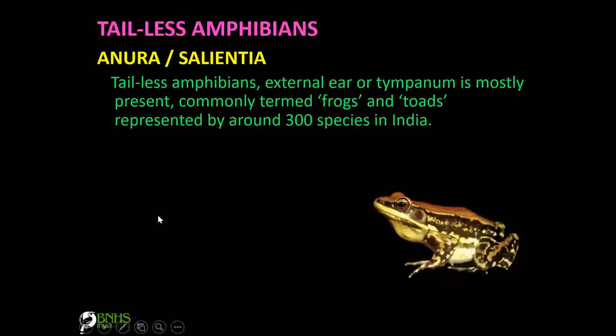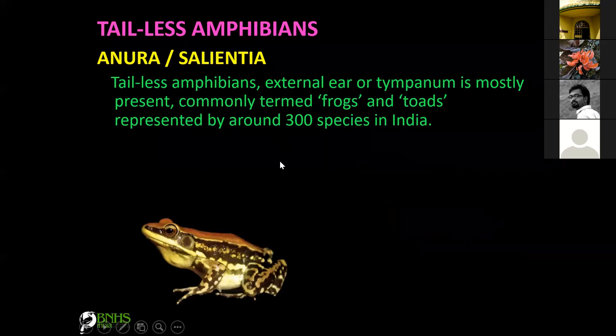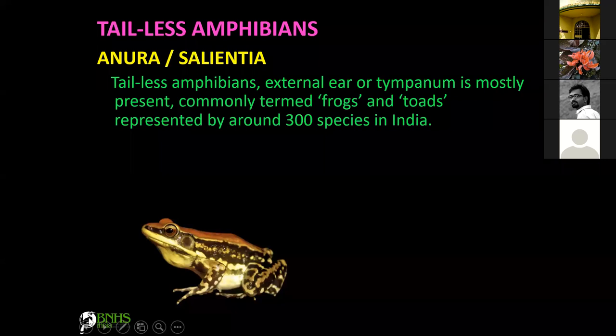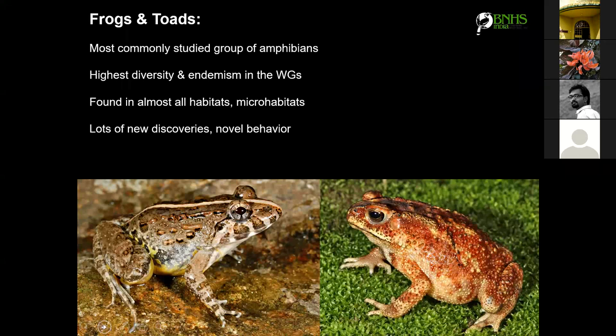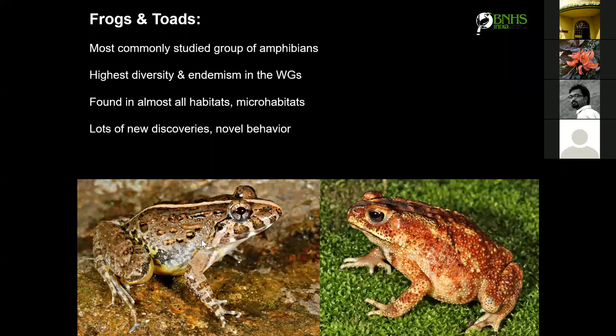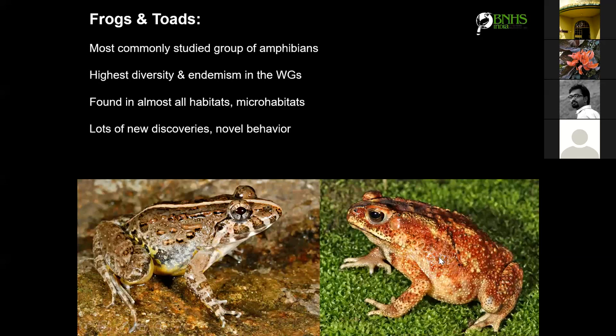The tailless amphibians — Anura — are the most diverse group found in India, particularly in the Western Ghats and Northeast India. Within Anura we have two types: frogs and toads. The key difference is that frogs have smooth, moist skin, while toads have dry and rough, warty skin.